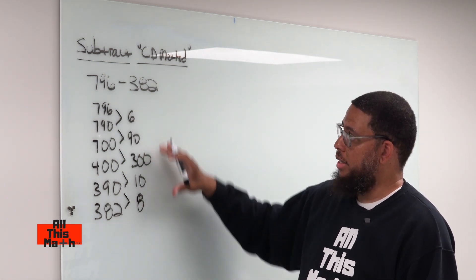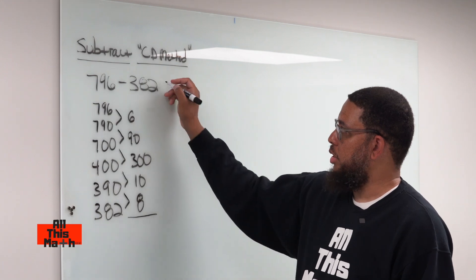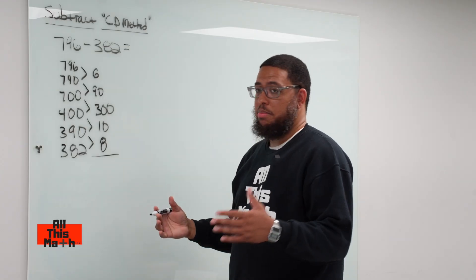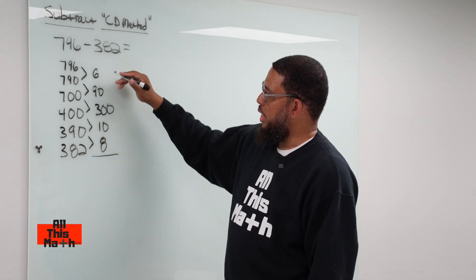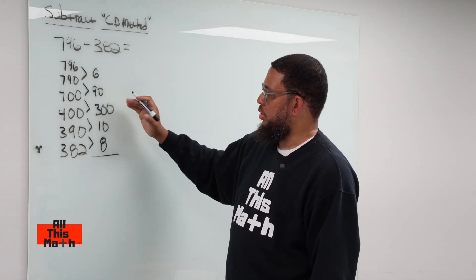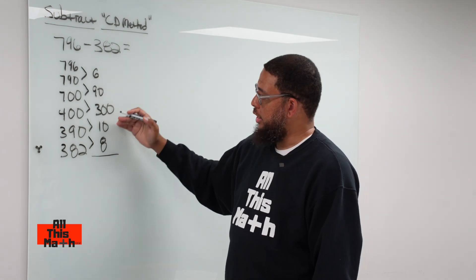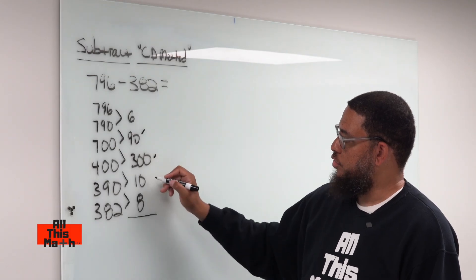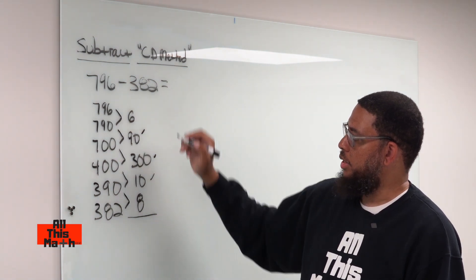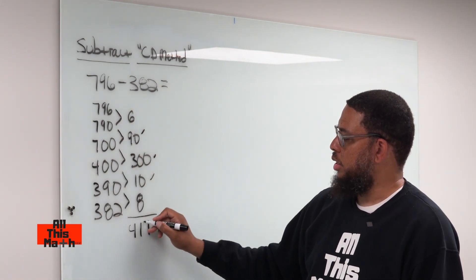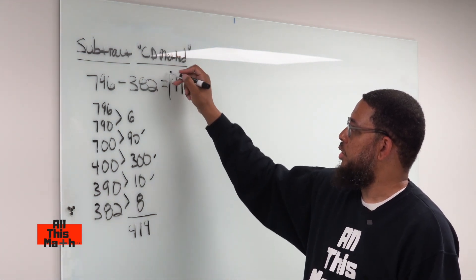We're going to combine them to a total — that's going to be the actual difference. I like to start with the biggest difference, which is 300. Then 300 plus 90 is 390. 390 plus 10 is 400. 400 plus 8 is 408. 408 plus 6 is 414. So the difference between 796 and 382 is 414.